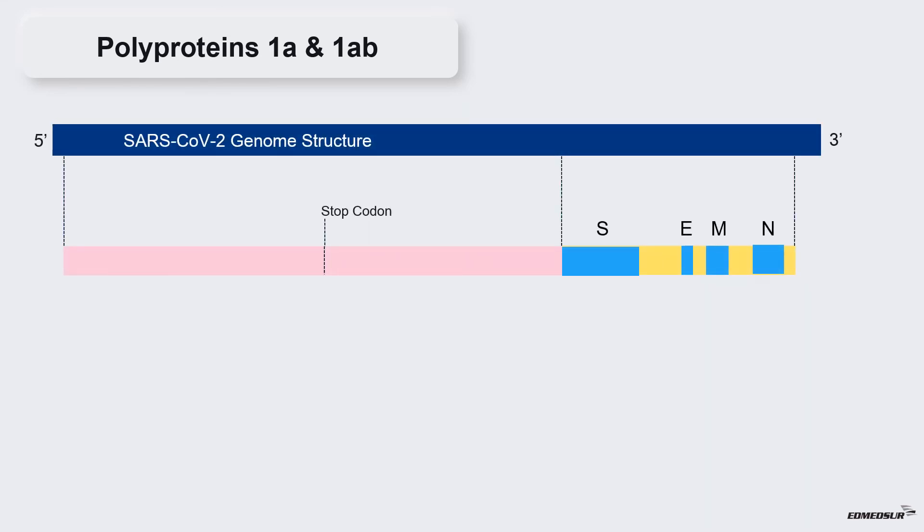There is one problem in the polyprotein production. There is a stop codon at the end of open reading frame 1a or ORF1a. If this is true, then only genes located in ORF1a segment of open reading frame would generate proteins and genes located in ORF1b segment would not be translated.